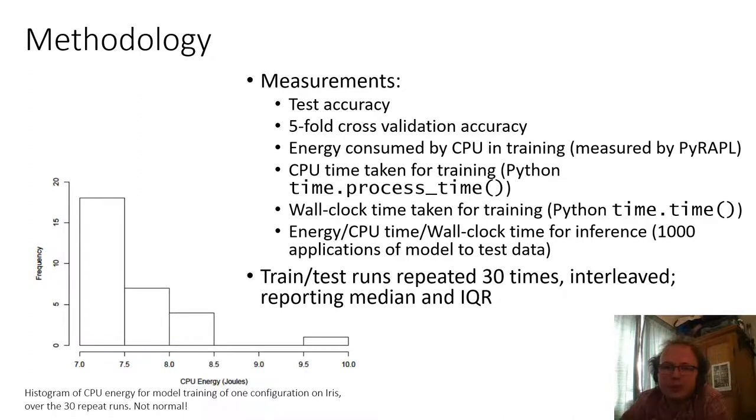The training and test ones were repeated 30 times interleaved, so that means we will go through each of the configurations once, and then repeat each of the configurations again, and so on, for each of 30 repeats. That's so that the random variation, random noise in energy and time measurements would impact each of the configurations roughly evenly, and try and counteract some of that noise. And we report median and interquartile range because as you can see that histogram there shows the energy measurements for 30 repeats of one configuration, and the distribution is definitely not normal.